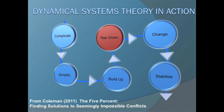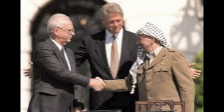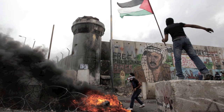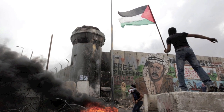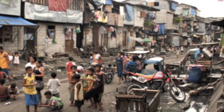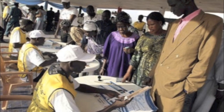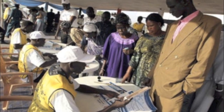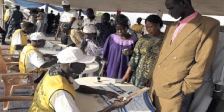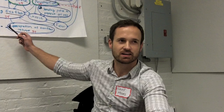The tear-down stage serves as a reality check for the positive future envisioned. With a better future in mind, what would return the parties to destructive conflict? What forces are inhibiting positive change? What processes, events, and institutions need to be in place in order to safeguard the future envisioned in the build-up phase?